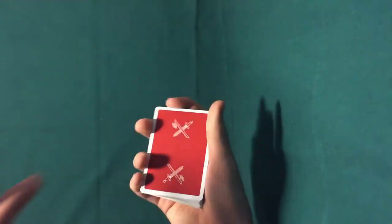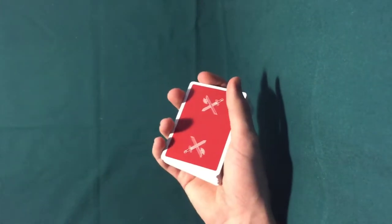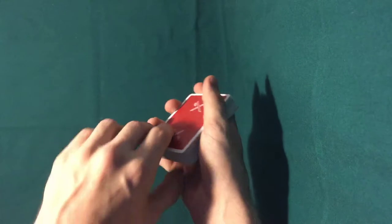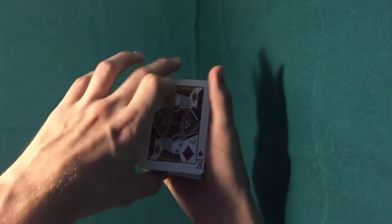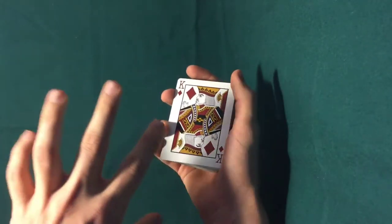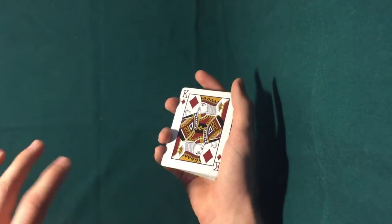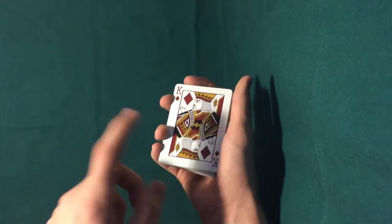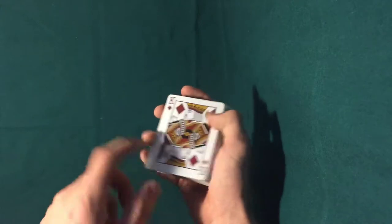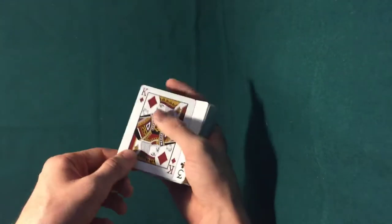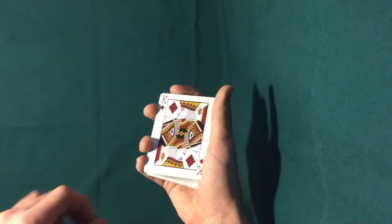So what you need to know in this trick is what a key card is, and that's about it. So a key card for this trick, and not for every trick, so don't just think key card is this definition right here. But in this trick, the king of diamonds will be the key card because it's on the bottom of the deck.